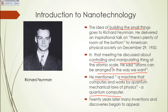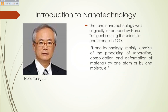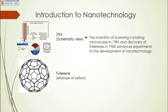Twenty years later, many inventions and discoveries began to appear. The term nanotechnology was first originally introduced by Norio Taniguchi during a scientific conference in 1974. Nanotechnology mainly consists of the processing, separation, consolidation, and deformation of materials by one atom or by one molecule. The invention of the scanning tunneling microscope in 1981 and the discovery of fullerene in 1985 advanced experiments toward the development of nanotechnology.